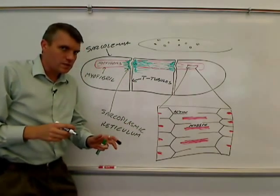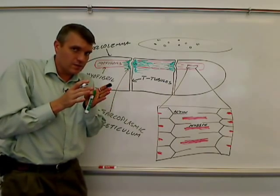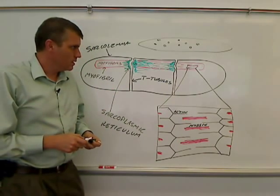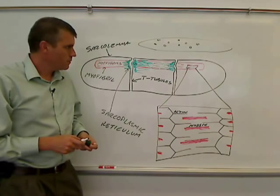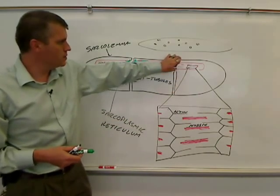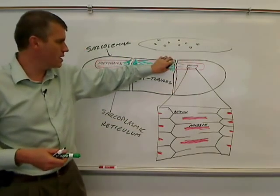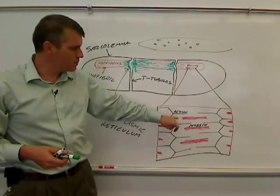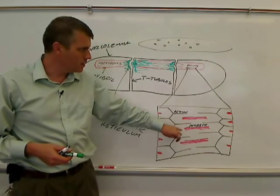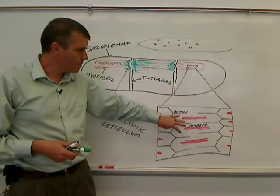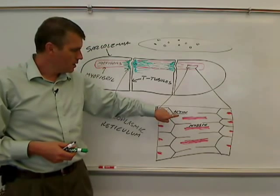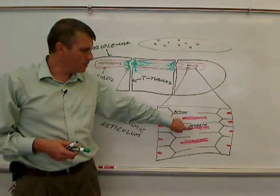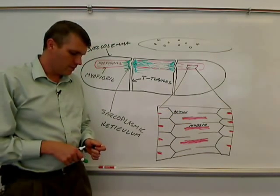And the cisternae of the sarcoplasmic reticulum is up against the T-tubules. Basically, as long as you know that the sarcoplasmic reticulum comes right up to the T-tubules, you'll be in good stead. The myofibrils are these cylindrical structures inside of the muscle fiber. And the myofibrils are made up of these proteins, actin and myosin, the myofilaments, or myofibers. Actin is the thin filament, and myosin is the thick filament.